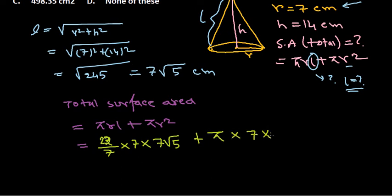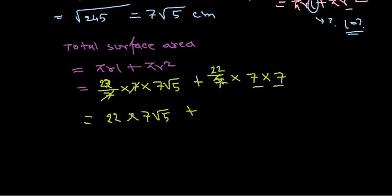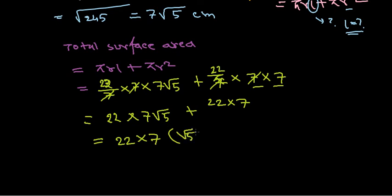The 7s cancel out with the denominator in each term. We are left with 22 × 7√5 for the first part and 22 × 7 for the second part. Taking 22 × 7 as a common factor, we get 22 × 7 × (√5 + 1). After calculating all these values, we arrive at the result.